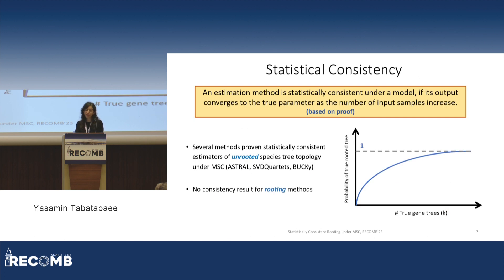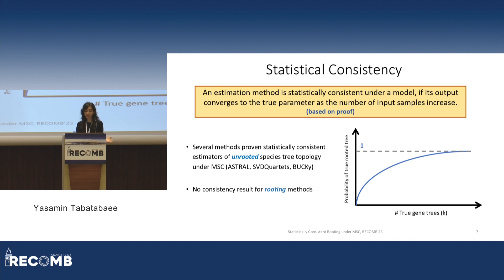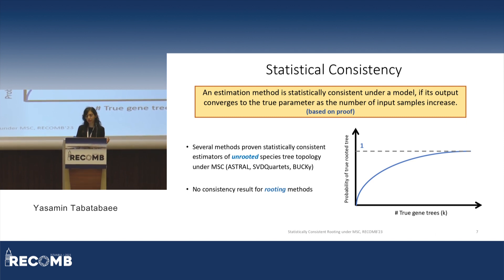A property that is desirable and important in designing species tree estimation methods is statistical consistency. Informally, an estimation method is called statistically consistent under a model if its output converges to the true parameter as the number of input samples increases. Here the parameter is the topology of the species tree, whether unrooted or rooted. In the past decade, there has been a large literature on proving statistical consistency for species tree estimation methods, and several methods have been proven statistically consistent for estimating the unrooted species tree topology, but no consistency proofs for rooting methods existed before this work.